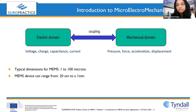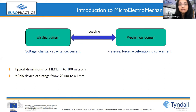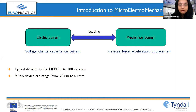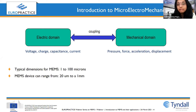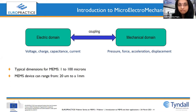MEMS stands for Micro Electro Mechanical System. As the name suggests, it has two domains: the electrical domain and the mechanical domain. In the electrical domain, we consider parameters like voltage, charge, capacitance, and current. In the mechanical domain, we have pressure, force, acceleration, and displacement. The coupling of these two domains makes the device work the way it does.